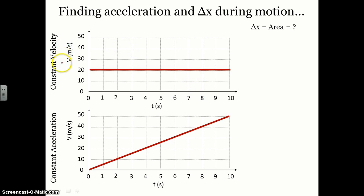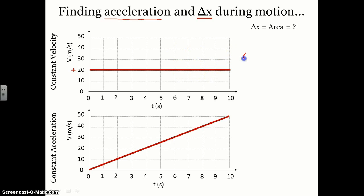Let's go back to a simple situation where something is moving at a constant velocity and remind ourselves how we find the acceleration and how we find the displacement during motion. In this first example, we have something moving with a constant positive velocity of 20 meters per second, which means it's moving forward at a constant rate. Acceleration can be found by taking the slope of a velocity versus time graph, which is the change in velocity divided by the change in time.